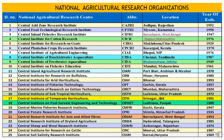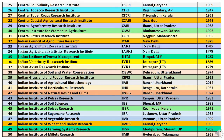Twenty-third is CSWRI — Central Sheep and Wool Research Institute — headquartered at Avikanagar, Rajasthan, started in 1974. Twenty-fourth is CIRC — Central Institute for Research on Cattle — headquartered at Meerut, Uttar Pradesh, established in 1987. Twenty-fifth is CSSRI — Central Soil Salinity Research Institute — headquartered at Karnal, Haryana, established in 1969. Twenty-sixth is CTCRI — Central Tuber Crops Research Institute — headquartered at Trivandrum, Kerala, started in 1963.